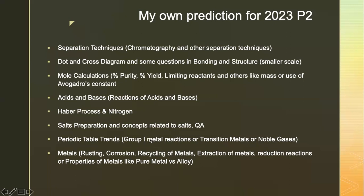Priority table trends — not much on group metals this year; last year covered group 17, so this year maybe transition metals or noble gas. I'm not saying you can totally throw away group 17 — there could still be tests — but I don't think it's as much as last year. Metals — I really back myself on this because this is the last year they are testing on blast furnace; this is the final year.